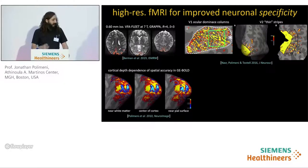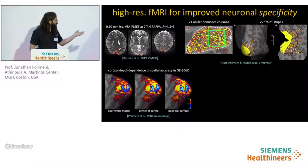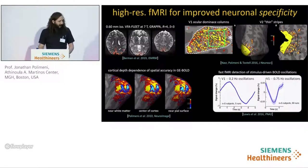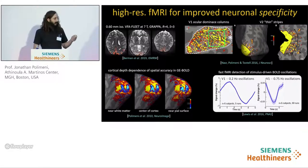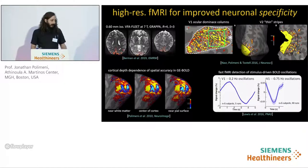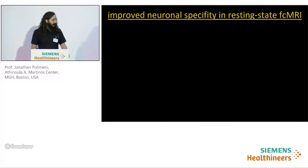We've also been investigating laminar or cortical depth-dependent fMRI responses, including early work looking at cortical depth dependence of spatial accuracy in BOLD and gradient echo BOLD. Recently, we've also been exploring the temporal resolution limits of fMRI, looking at using fast fMRI to detect rapidly oscillating stimuli and oscillations in fMRI signals.